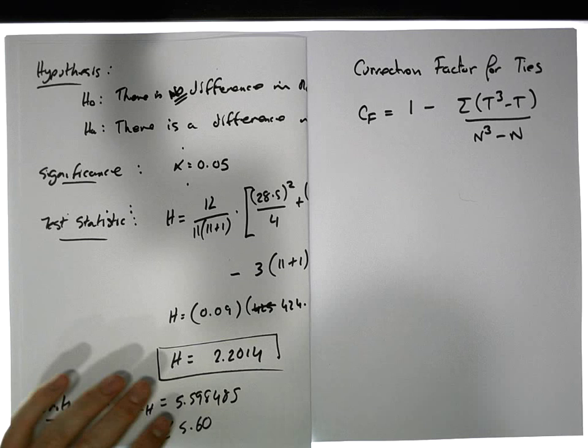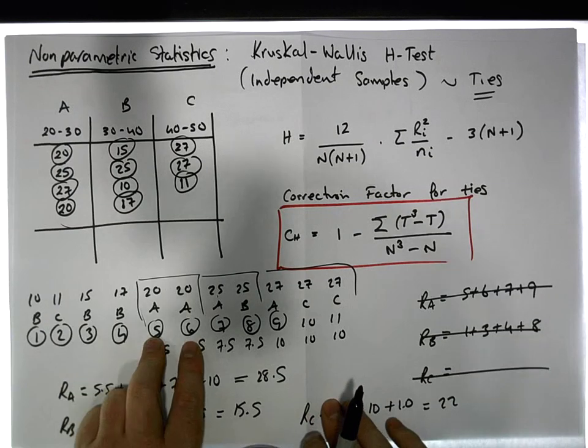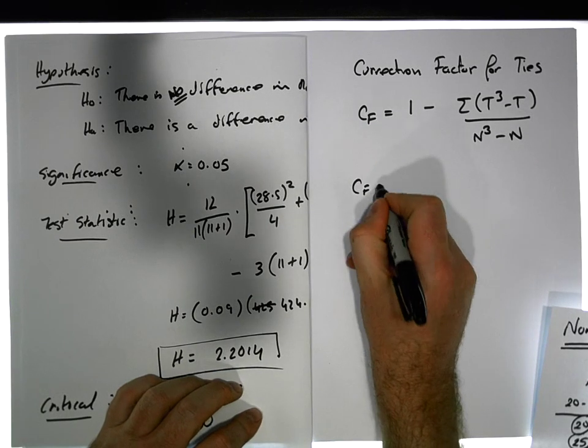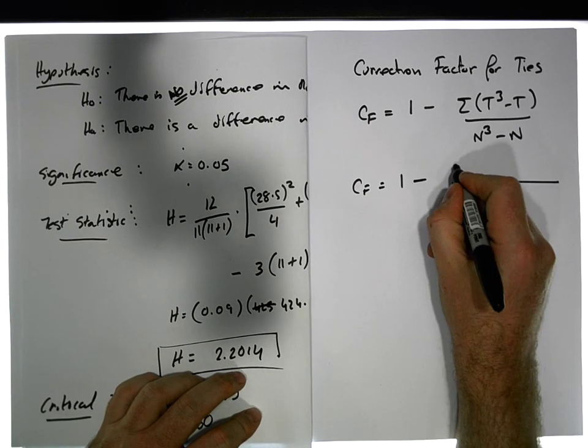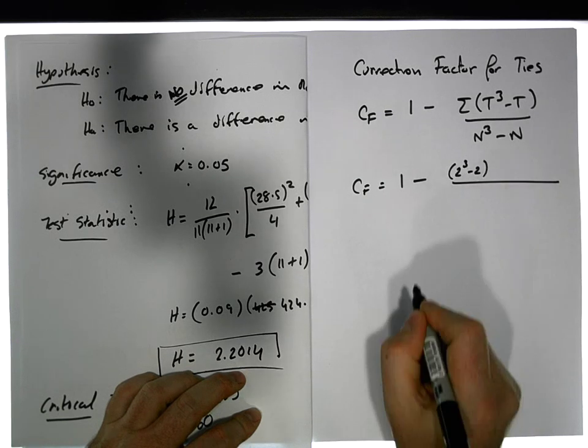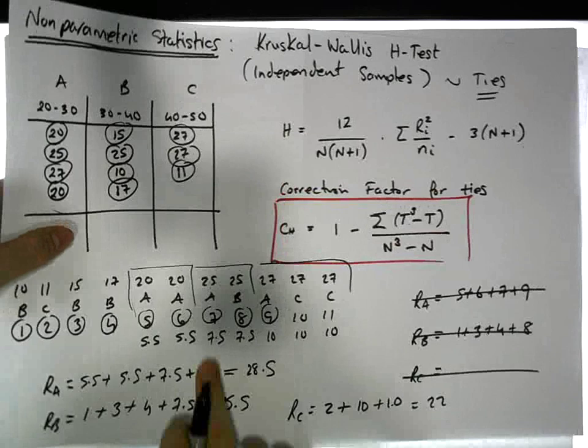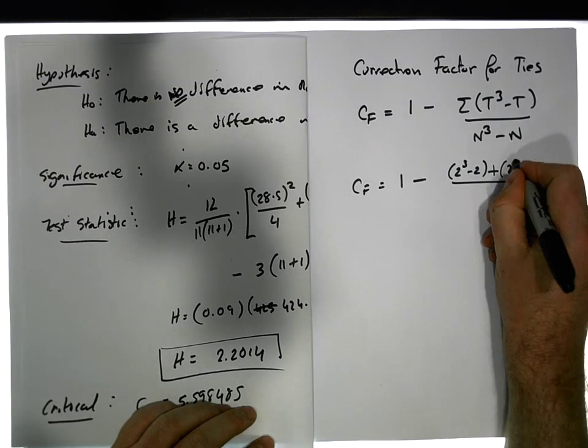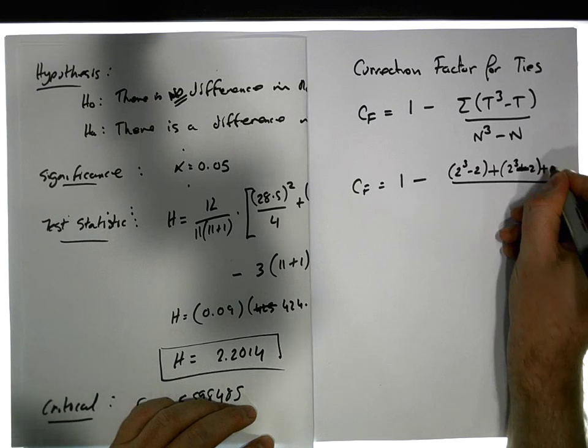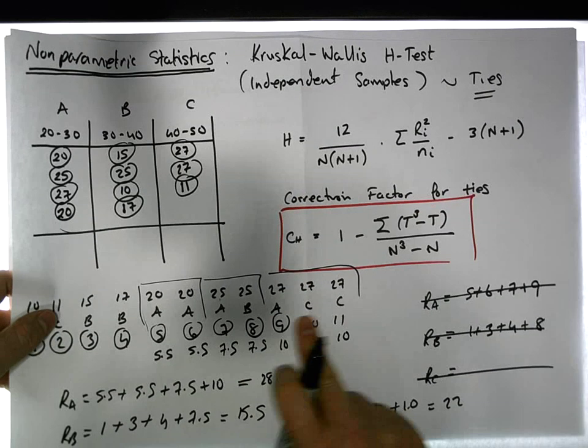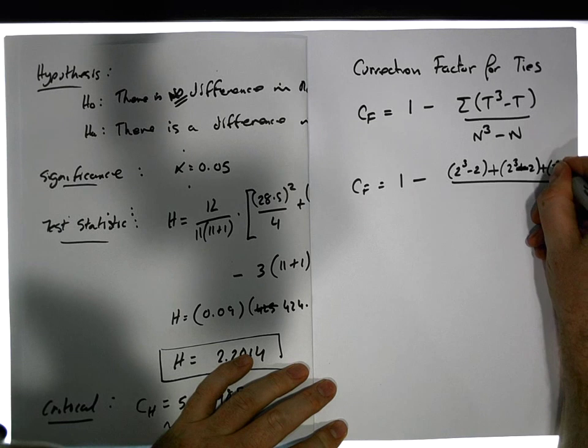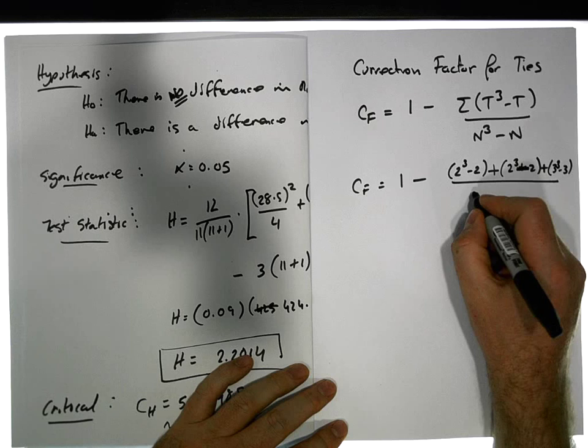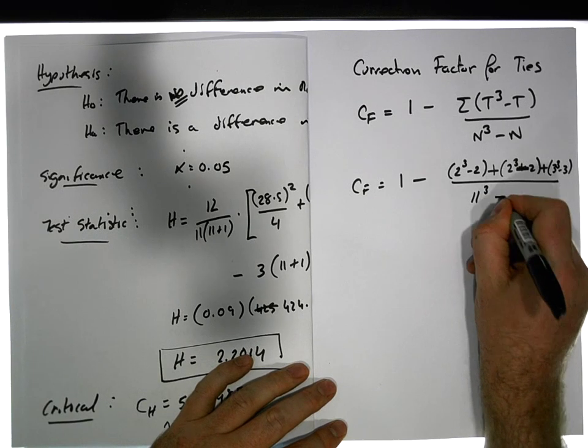We're going to have to calculate this t³ minus t three times. In relation to the first group there's only two values in it, so CF equals one minus, for the first group it's 2³ minus 2. For the second group there's two in it as well, so once again it's 2³ minus 2. For the third group there's three values, so it's 3³ minus 3.